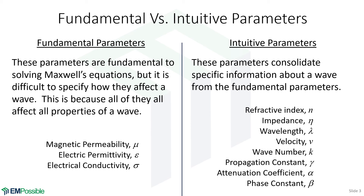Wouldn't conductivity completely characterize loss? Well, if the conductivity is zero, we'll know there will be no loss. But as soon as conductivity is non-zero, yes, that contributes to loss — but then suddenly, so do mu and epsilon in a very strange, complicated, non-intuitive way. For example, we have the attenuation coefficient. All of the loss information encoded in mu, epsilon, and sigma will be consolidated and isolated to a single parameter. These are not the fundamental parameters — these are things we calculate from an analysis.